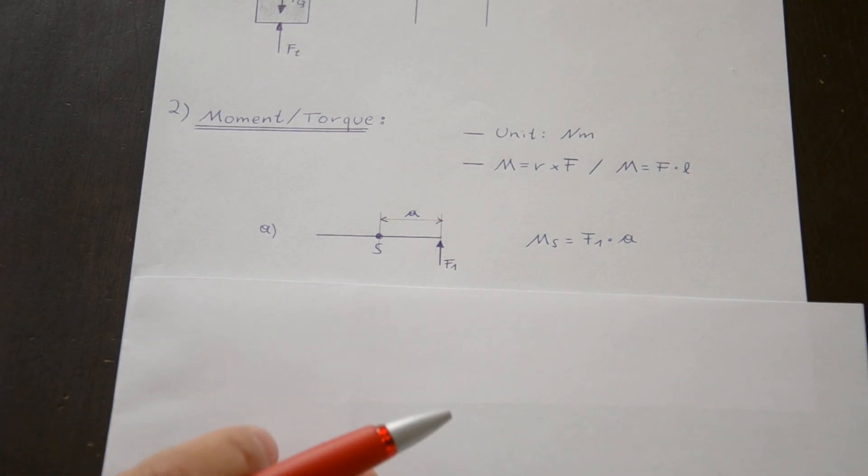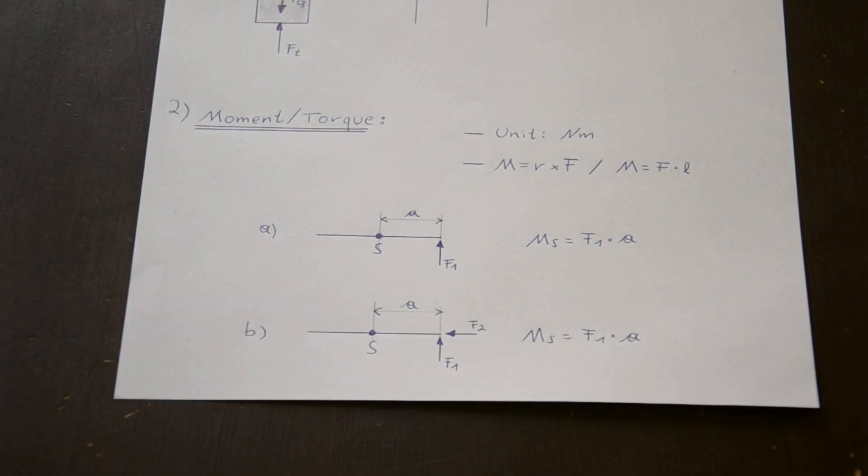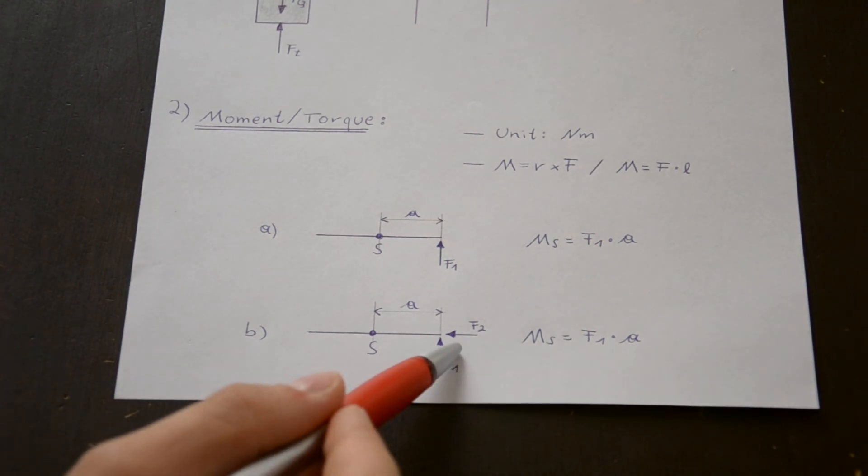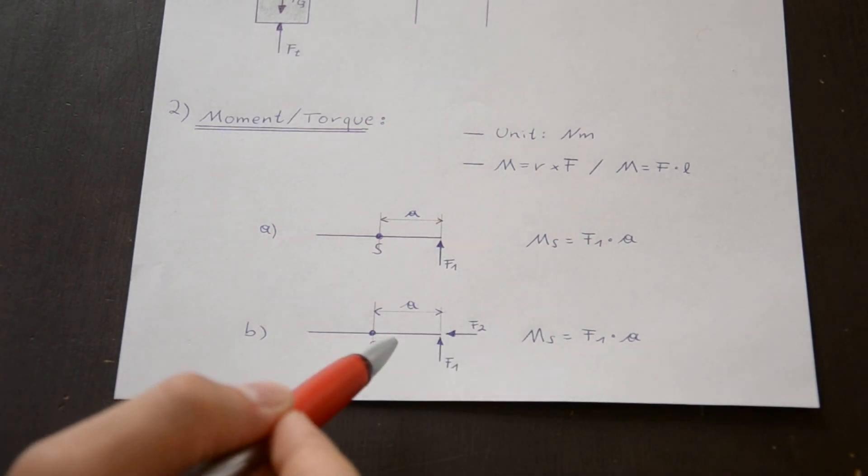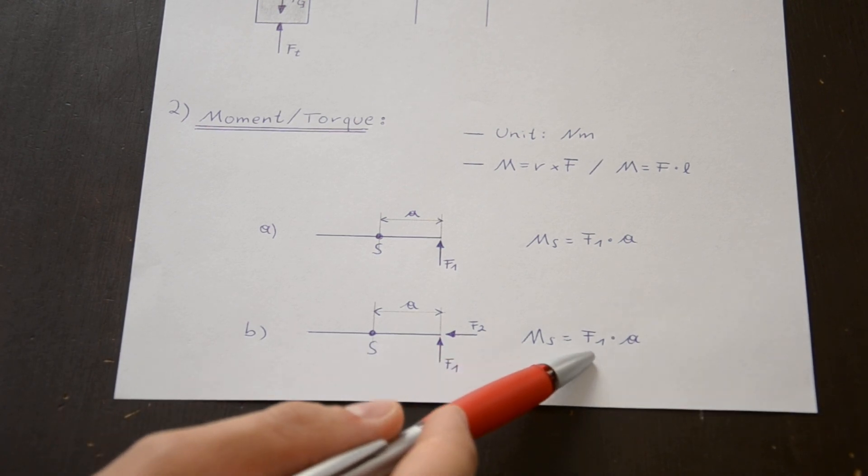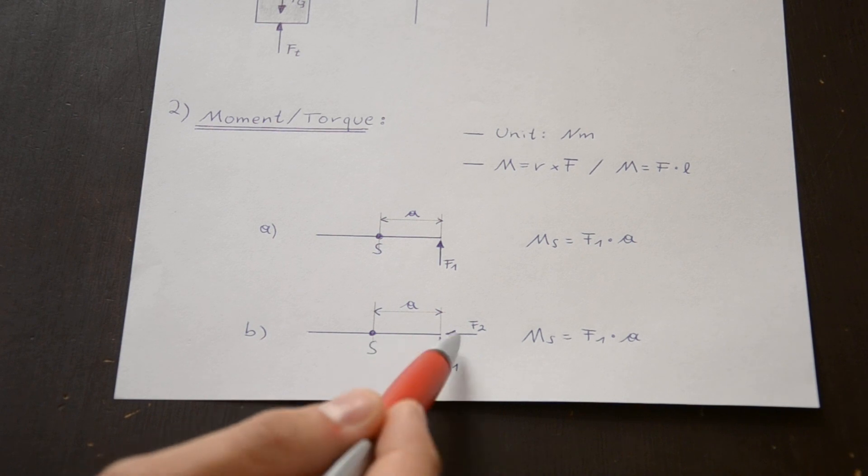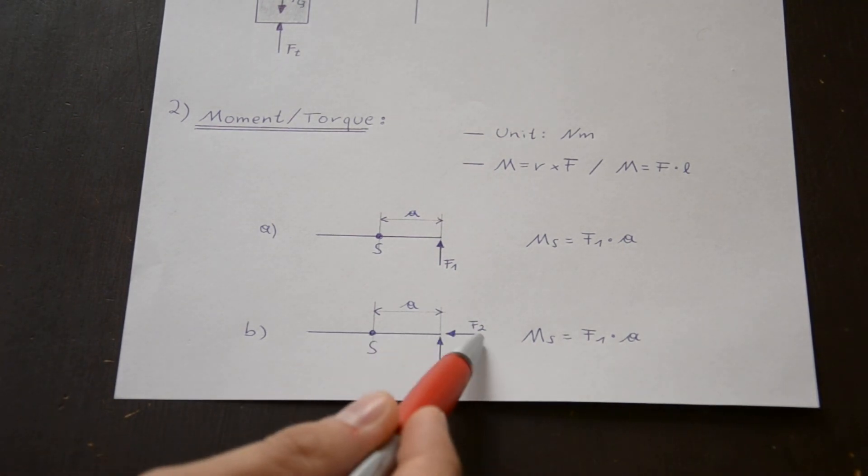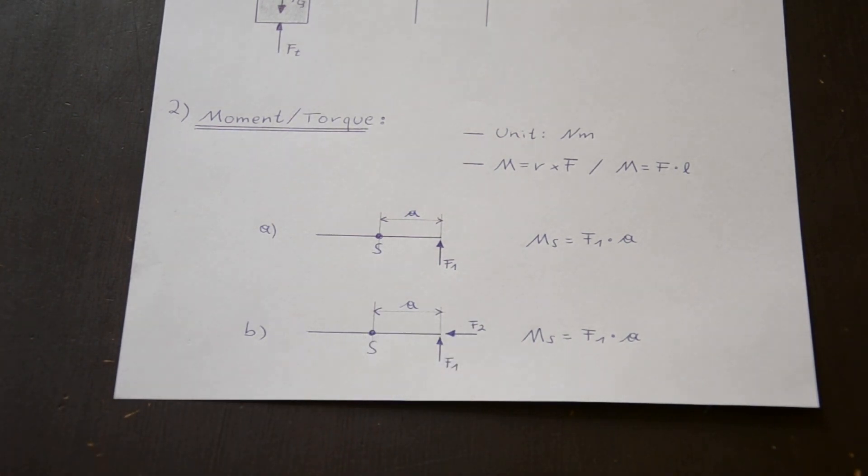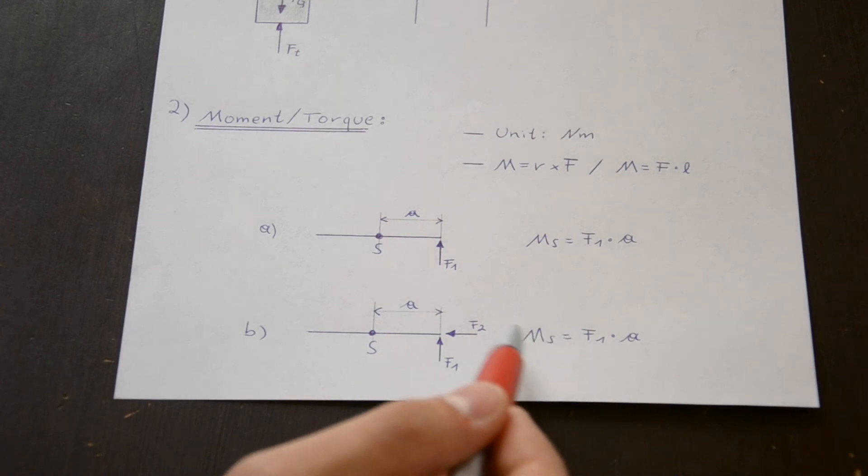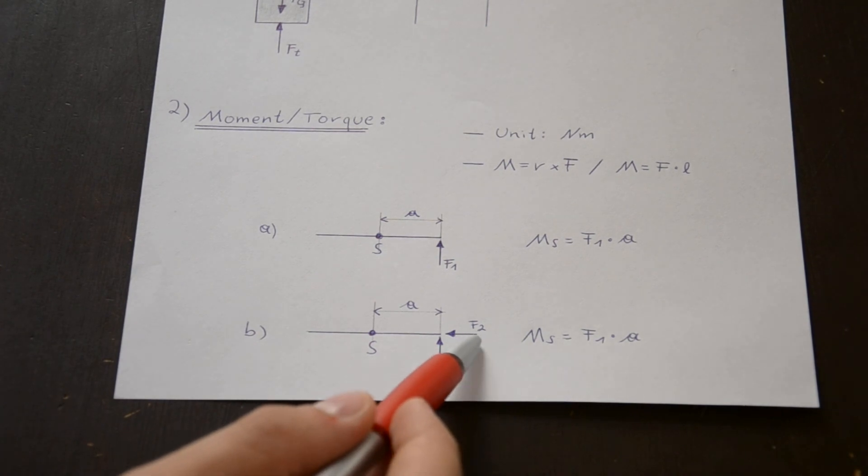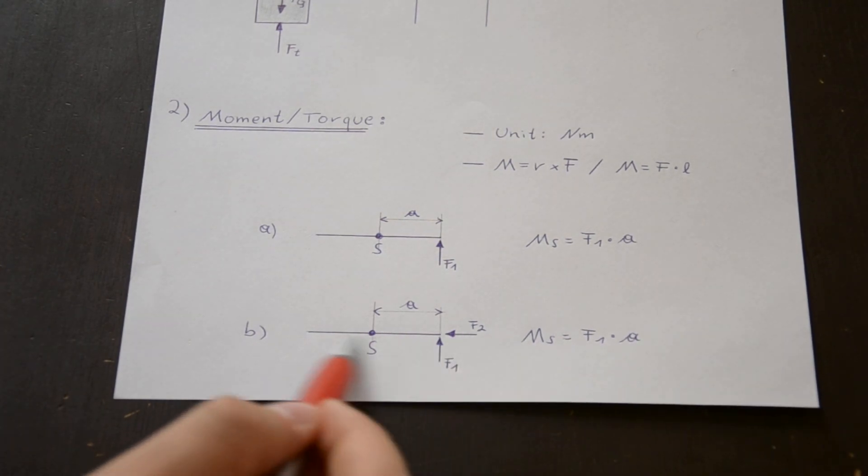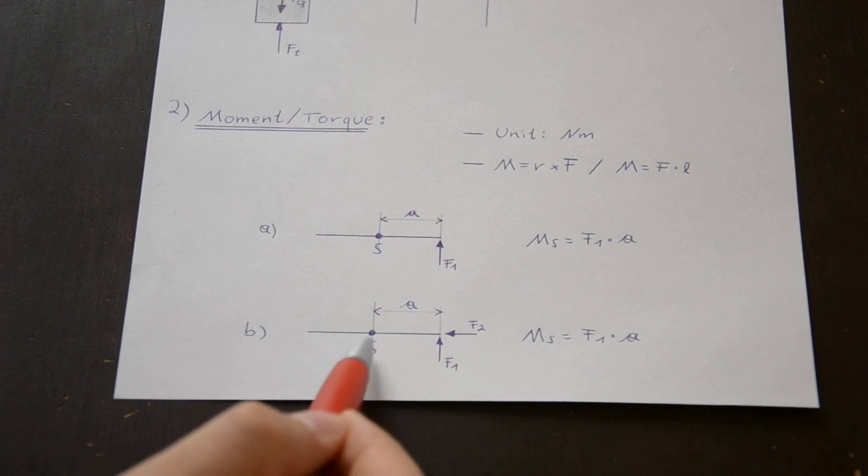And in the second case, we have two forces acting on the lever: F1 and F2. And in this case, the torque concerning point S again is F1 multiplied with A, because F2 does not have a moment concerning point S. Because we are not able to find a distance between the line of action of the force F2 and point S that is at right angles to the line of action of the force F2. You can say the distance is zero, and according to the definition, if the distance is zero, then the moment is zero. You can imagine it like the force F2 is just pushing the whole lever to the left, but it does not have a moment concerning S.